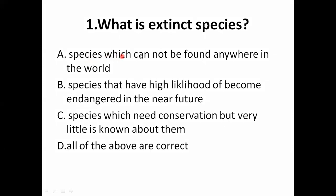What is an extinct species? A is species which cannot be found anywhere in the world. B is species that have a high likelihood of becoming endangered in the near future. C is species which need conservation but very little is known about them. D is all of the above are correct. The answer is A: species which cannot be found anywhere in the world.